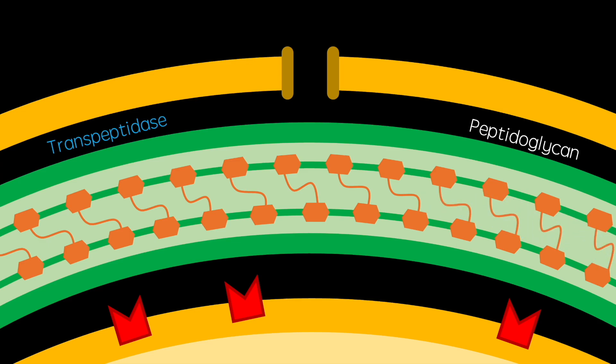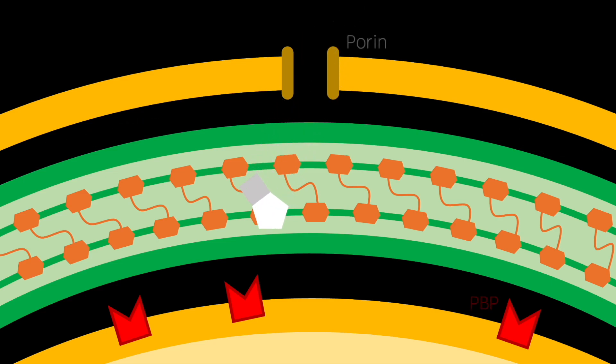This bacterial cell wall is the target at which penicillin exerts its antibiotic effects. In gram-positive bacteria, penicillin can access the cell wall and membrane directly. But in gram-negative bacteria, it enters via transport molecules known as porins.